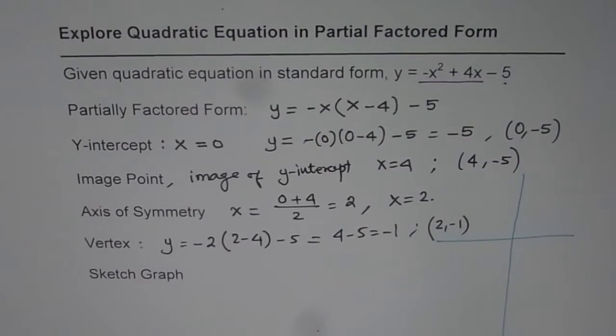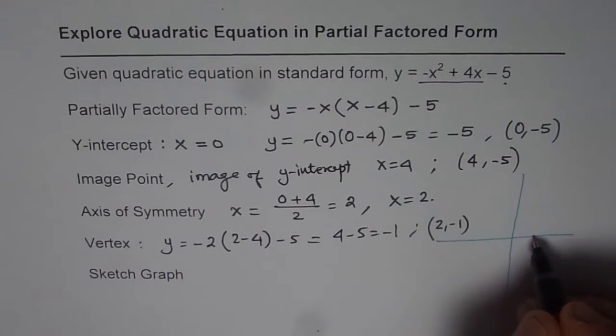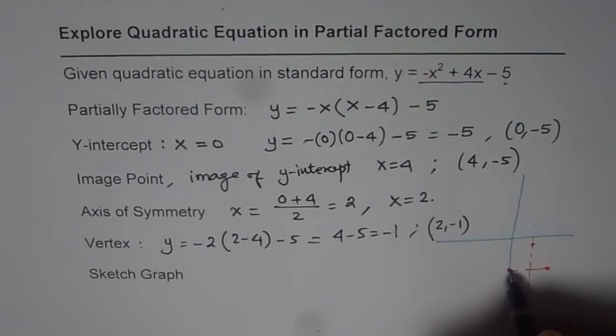Here, let us say that we have the vertex at 2 minus 1. So x equals 2, y equals minus 1. The image points are y-intercept, 0 minus 5. This is 1, let this be 5 minus for us. And image will be, that is axis of symmetry. And image will be same distance away. So that is y-intercept. This is the image. That is the vertex.